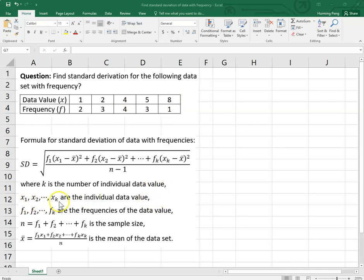x₁, x₂, to xₖ are the individual data values. In our example, we have x₁ is 1, x₂, x₃, x₄, x₅. And the f are the frequencies, so frequencies here. And n, what is n? Here is n. n is the sample size. It's just the sum of the frequency.